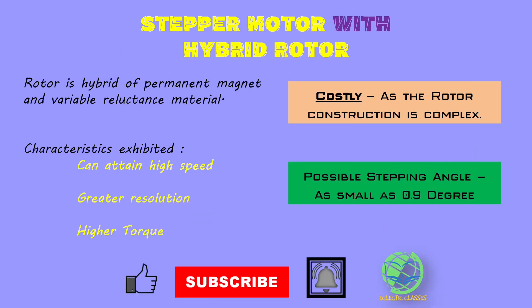Hybrid rotor: here the rotor is a hybrid between permanent magnet and variable reluctance versions. Being a hybrid of both, it has advantages of both types, which are higher resolution, speed, and torque. However, due to the hybrid rotor construction being complex, it is costly in comparison to the other two types. This is used in applications where small stepping angles are required, as we can get a stepping angle of 0.9 degrees with this type of stepper motor.